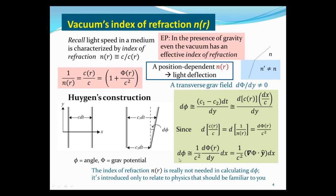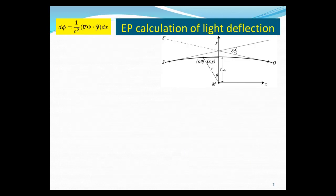We introduced the index of refraction just to connect to something familiar from elementary physics — that changing index of refraction or changing speed leads to bending of light. Now, to compute the finite deflection angle, we accumulate all the infinitesimal deflections along the path. The light travels from a source, gets bent by the gravitational field, and reaches the observer. The observer, assuming light travels straight, perceives the source to be at an apparent position S-prime instead of the true position S. The total deflection angle is the integral of all infinitesimal contributions.